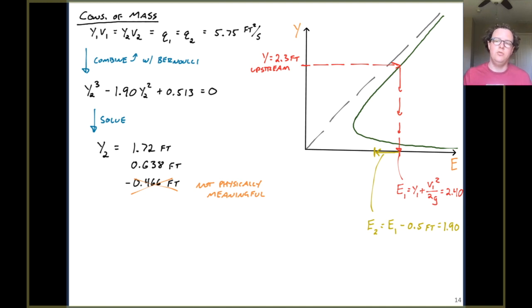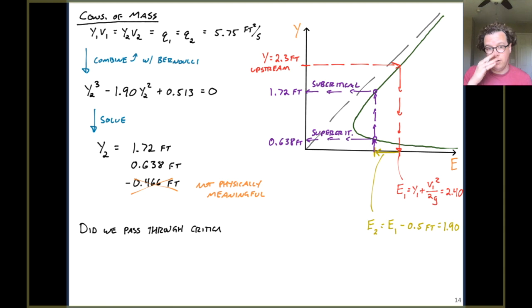And so that increase in bed elevation shows up as a decrease in specific energy. So our specific energy is going to drop by 0.5 feet. If we drop the specific energy by 0.5 feet, where does that leave us? So you can sort of see I've now got this yellow arrow. I'm moving to the left by 0.5 feet. And that tells me one of two things must be possible. Right? I know the new specific energy, but I don't know if it's subcritical or supercritical flow. I know that I'm existing at one of those two points, either the deeper subcritical flow or the shallower supercritical flow.